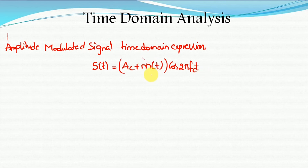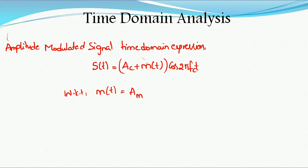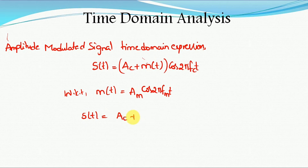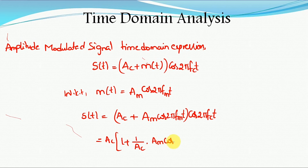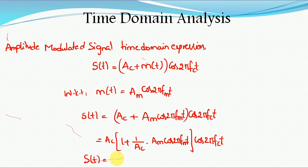Now substitute the value of the message signal m(t) = Am cos(2π·Fm·t) into S(t). We get S(t) = [Ac + Am cos(2π·Fm·t)] · cos(2π·Fc·t). Taking Ac as a common factor: S(t) = Ac · [1 + (Am/Ac) cos(2π·Fm·t)] · cos(2π·Fc·t).